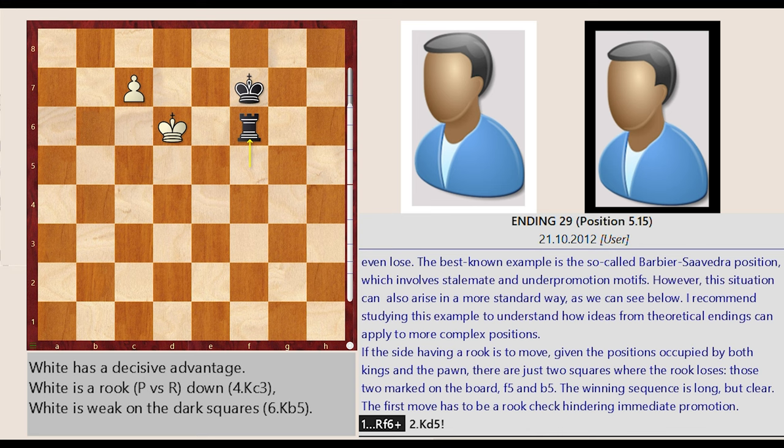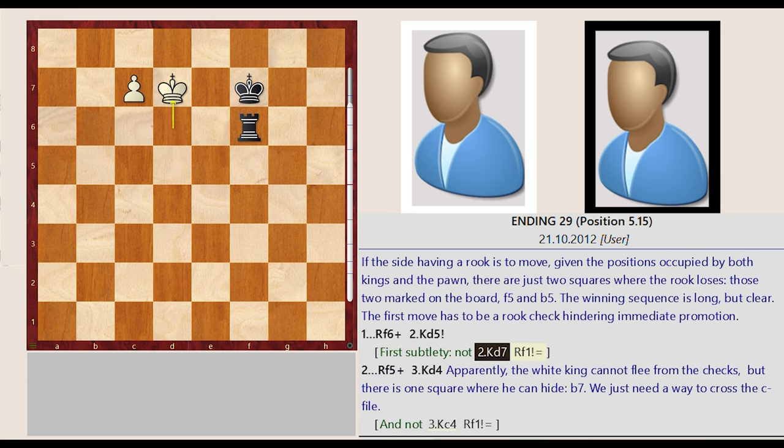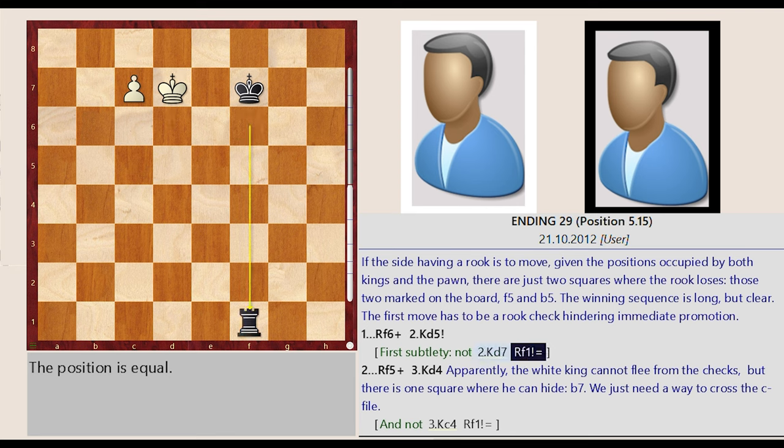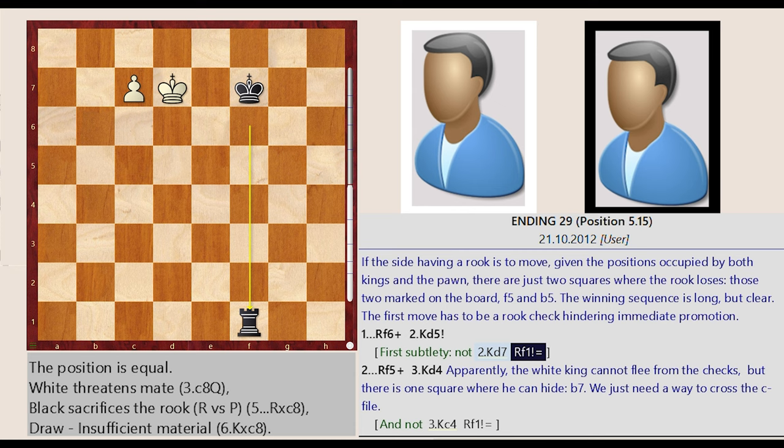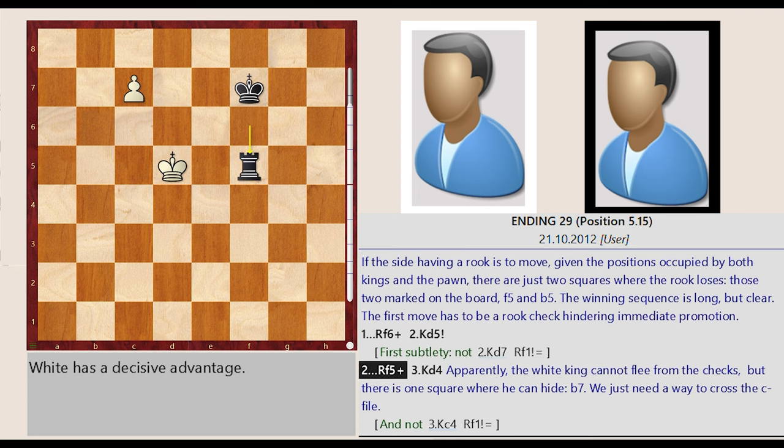Rook f5 f6. First subtlety, not King d6 d7. Rook f6 f1. King d6 d5. Rook f6 f5.